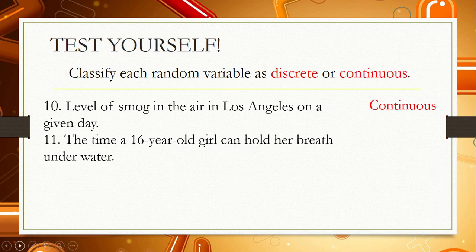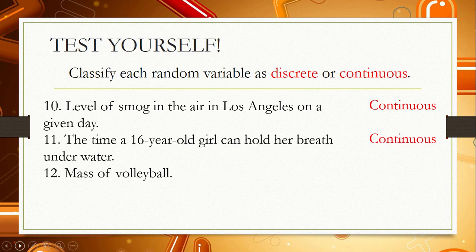Number 11: the time a 16-year-old girl can hold her breath underwater. You will measure how many minutes she can hold her breath, so this is a continuous random variable. Number 12: the mass of a volleyball. From the word 'mass' — it involves measurement — so it is a continuous random variable.